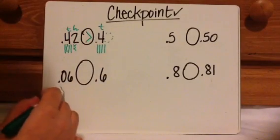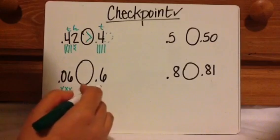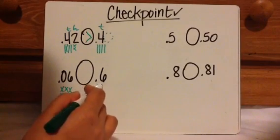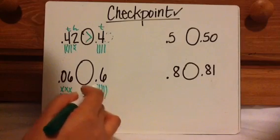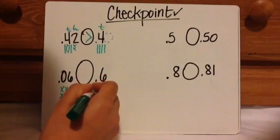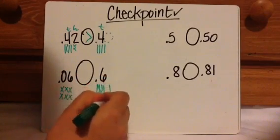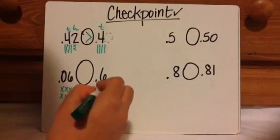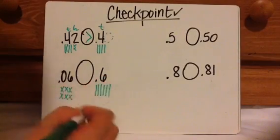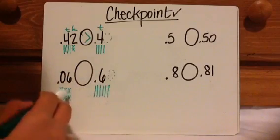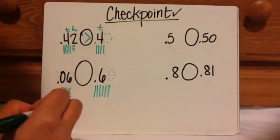So six hundredths — one, two, three, four, five, six. And then six tenths — one, two, three, four, five, six. So six tenths is more than six hundredths.